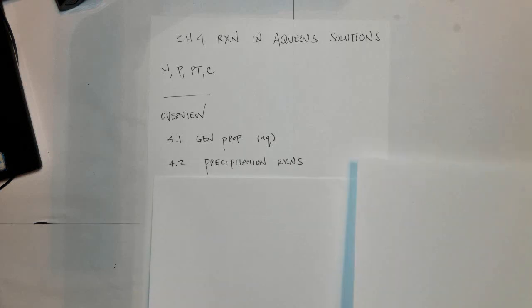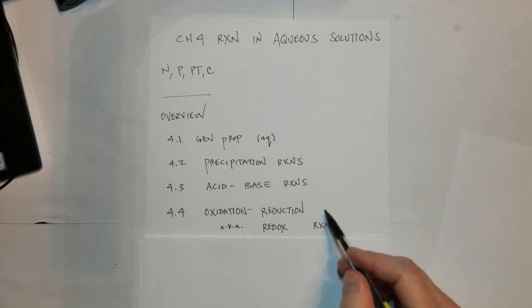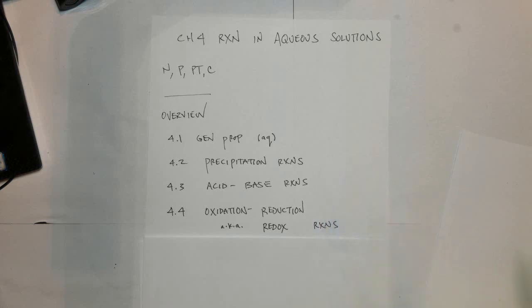Section 4.2 are things called precipitation reactions, also known as solid forming reactions. Section 4.3 is an acid-base reaction area. Section 4.4 is an area where we study oxidation-reduction reactions, a.k.a. redox reactions. Each one of these is its own individual videocast.